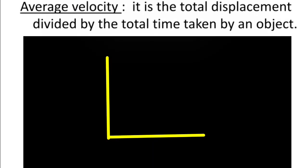Coming to the next one: average velocity. It is the total displacement divided by the total time taken by an object. For example, a rocket traveled a displacement of 600 meters towards south, and the time taken for this travel is 300 seconds. Dividing 600 meters by 300 seconds, we get an average velocity of 2 meters per second.